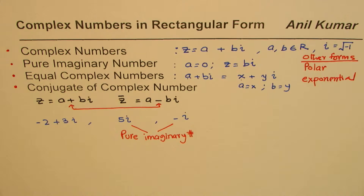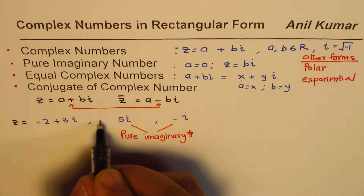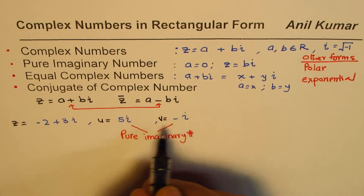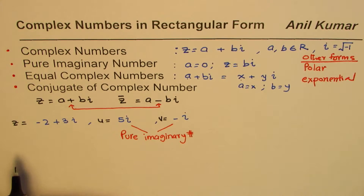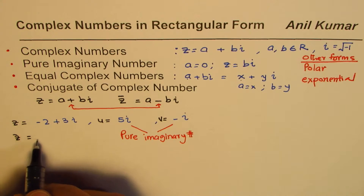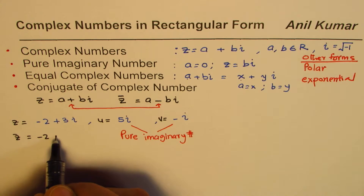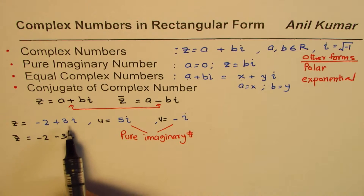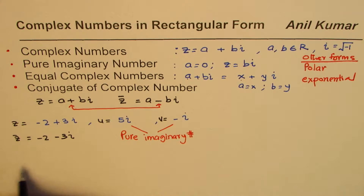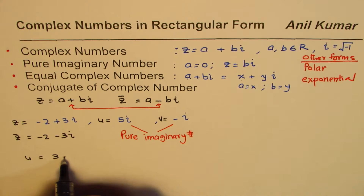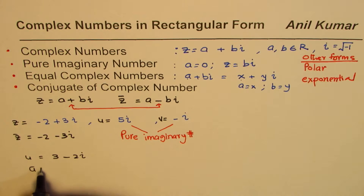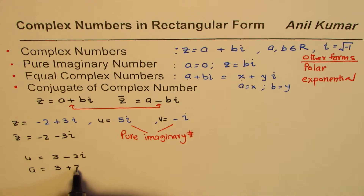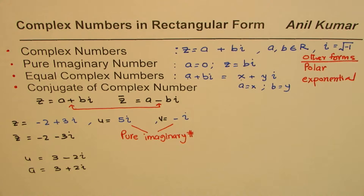Now let's write the conjugates of these numbers. Call the first number z, the second u, and the third v. The conjugate of z equals minus 2 minus 3i — only the sign of the imaginary part changes. For another example, if u equals 3 minus 2i, then the conjugate of u is 3 plus 2i. That is how you find the conjugate of a number.